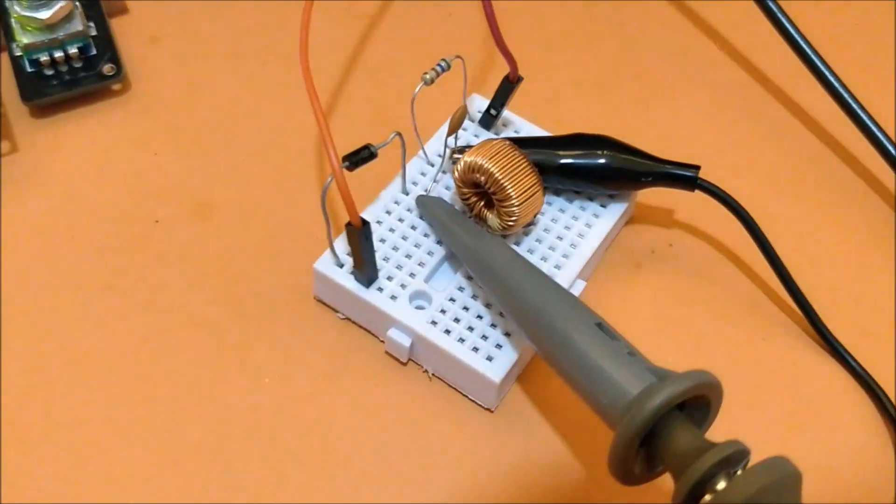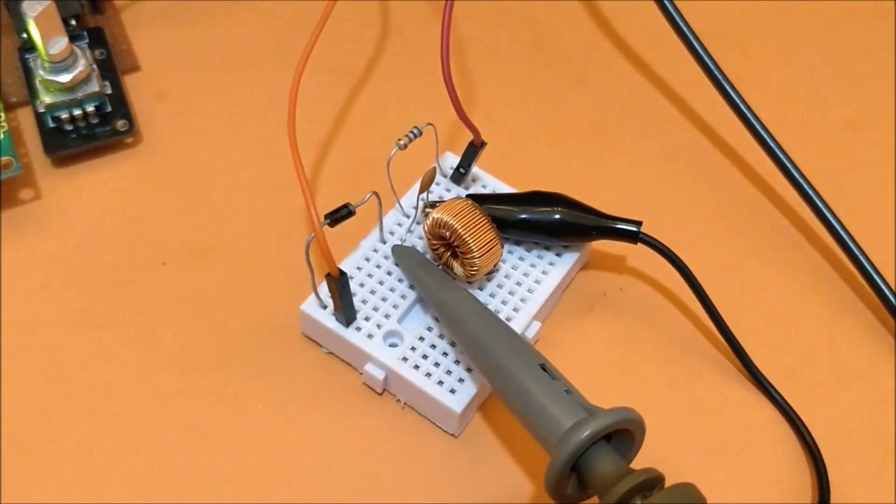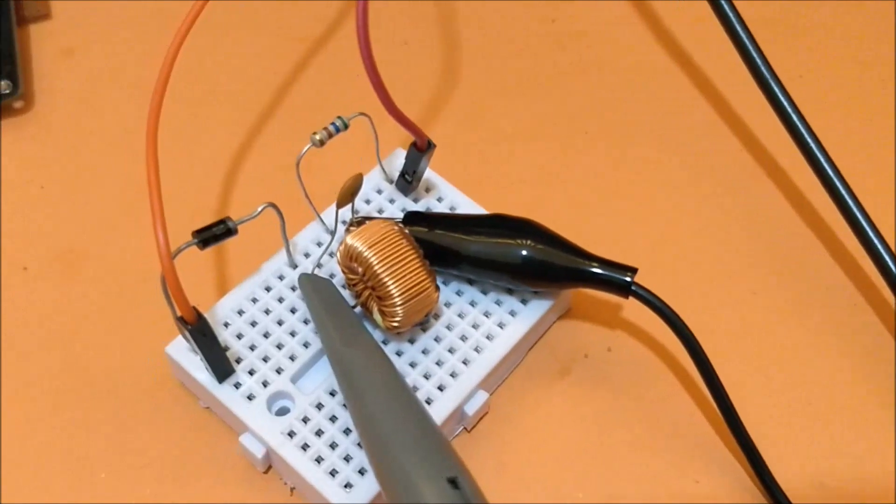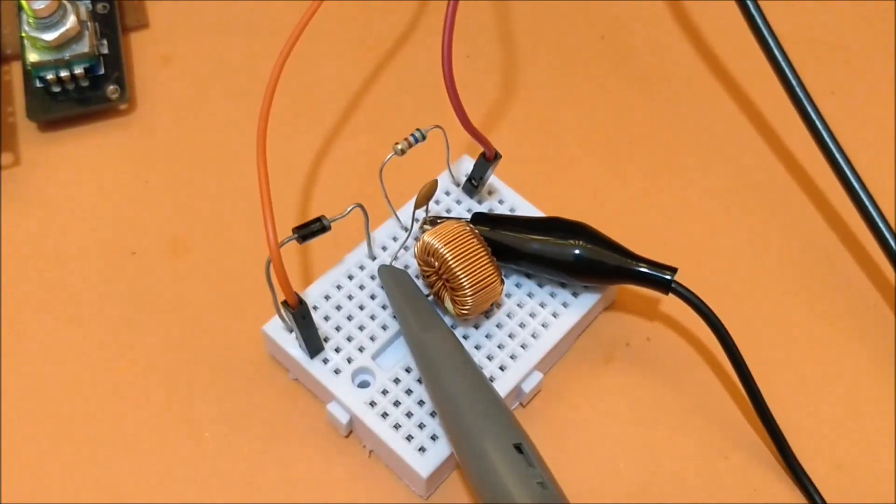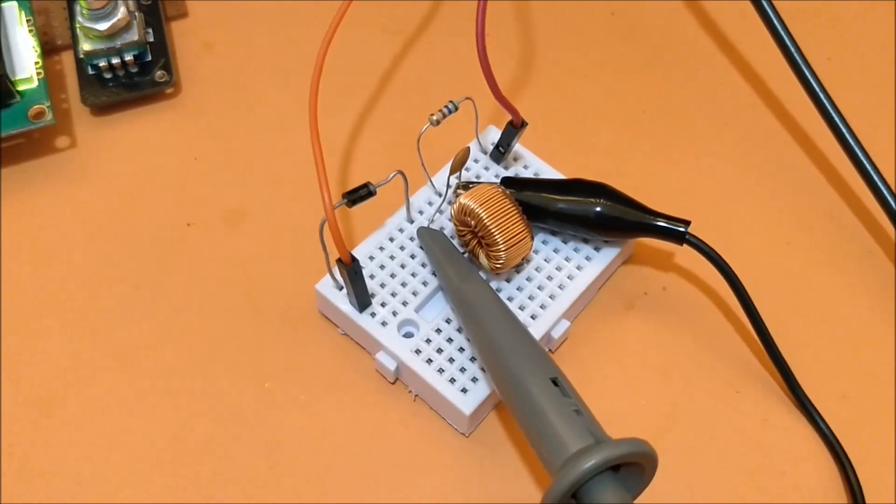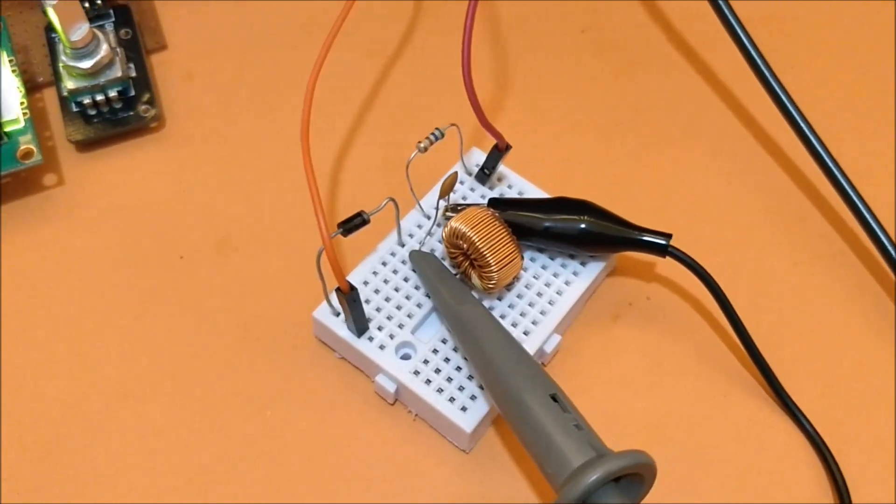So this is the tank circuit which I have built. The circuit diagram and the complete procedure can be found at the link given in the description of this video. Here I will just show you how you can use the scope to measure the resonance frequency.